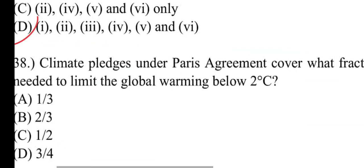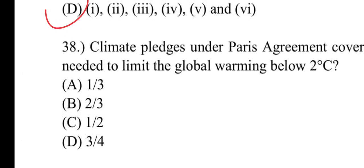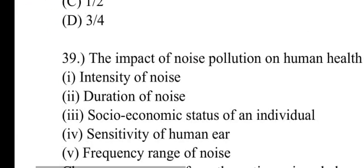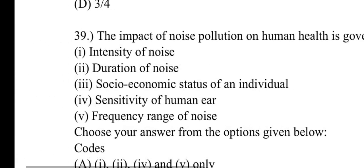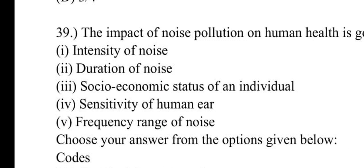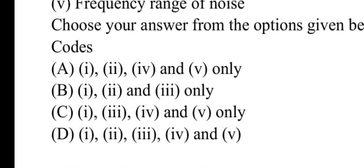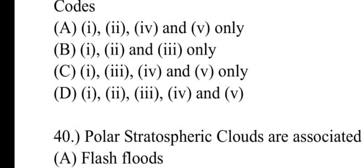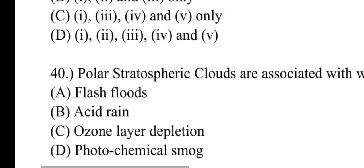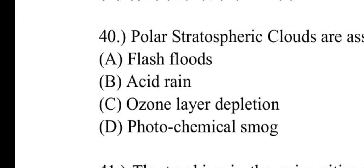Number thirty-eight: Climate pledges under Paris Agreement cover what fraction of greenhouse gas emission reduction needed to limit global warming below 2 degrees Celsius? Number A: one by third will be correct. Number thirty-nine: The impact of noise pollution on human health is governed by what? Options include intensity of noise, duration of noise, socioeconomic status of individual, sensitivity of human ear, frequency range of noise. Number A: 1, 2, 4, 5 only will be correct. Number forty: Producing polar stratospheric clouds are associated with which environmental issue? Number C: ozone layer depletion will be correct.